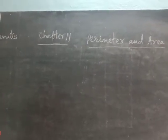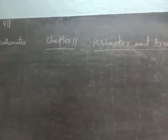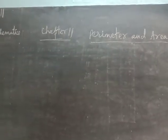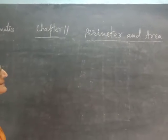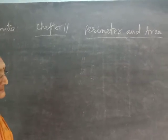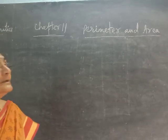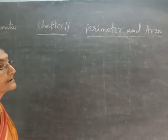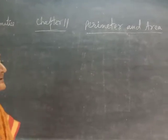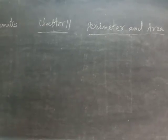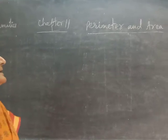Good morning students. Welcome to Mathematics class. Today we are going to study Chapter 11: Perimeter and Area. In class 6, you have already learned perimeters of plane figures and area of squares and rectangles. Perimeter is the distance around a closed figure, while area is the region enclosed by the figure.